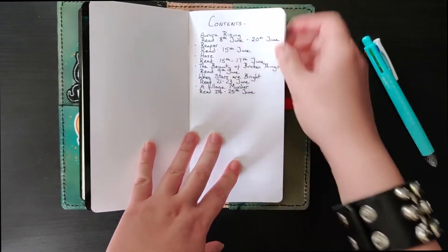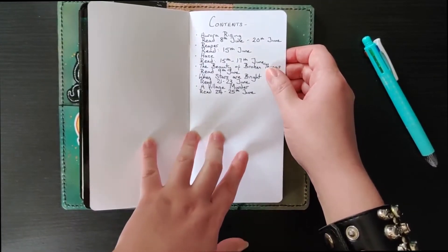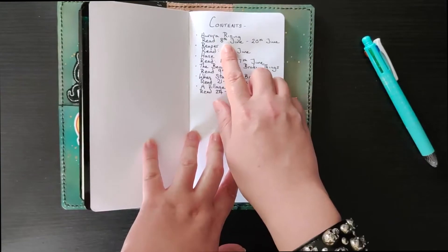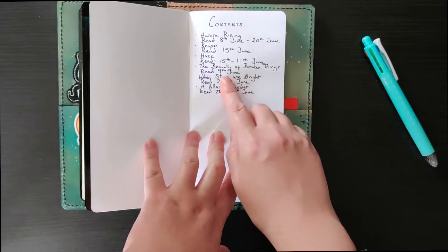So again is really nothing fancy, I'm a really minimalist planner so it's just literally the date that I started the book and the date I finished it so you can see some of these I read in one day.